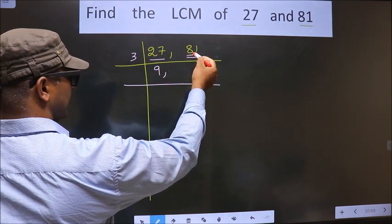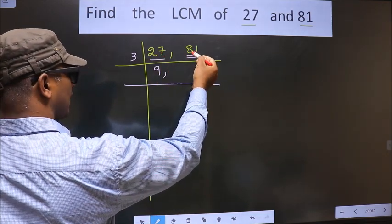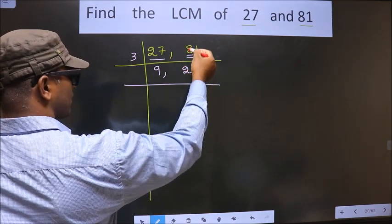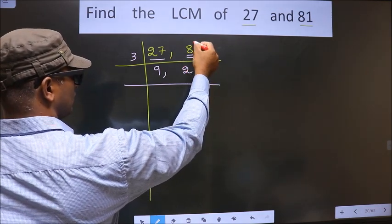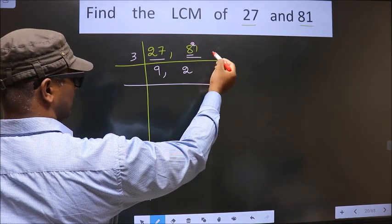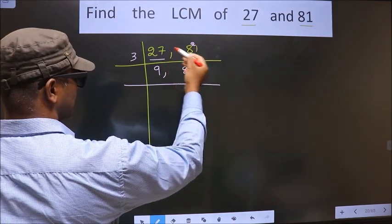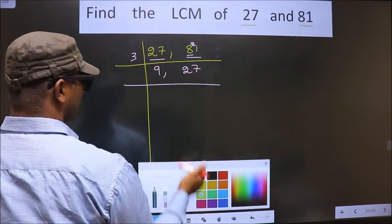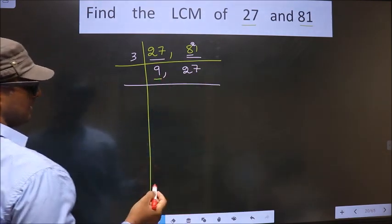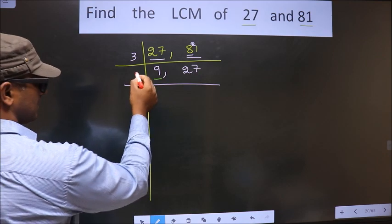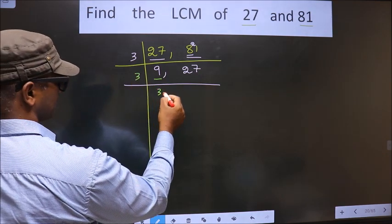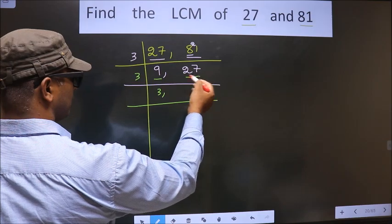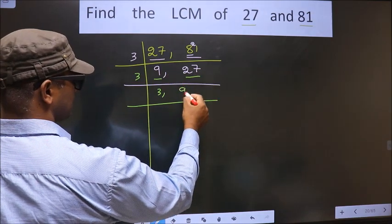So here the first number is 8. A number close to 8 in the 3 table is 6. 8 minus 6 is 2, carried forward making it 21. When do we get 21 in the 3 table? 3 sevens is 21. Now here we have 9 — 9 is nothing but 3 threes is 9. The other number is 27; when do we get 27 in the 3 table? 3 nines is 27.